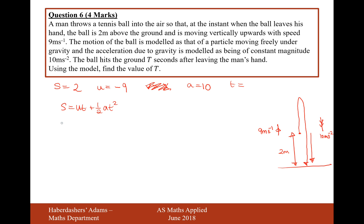And substituting the values, it's going to be 2 equals minus 9t plus a half times 10. That's 5, 5t squared.